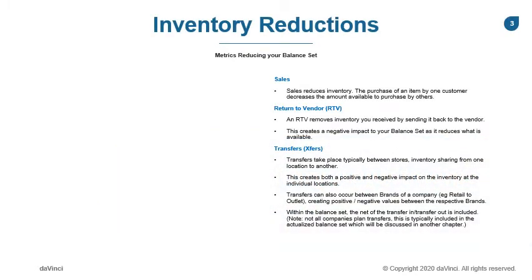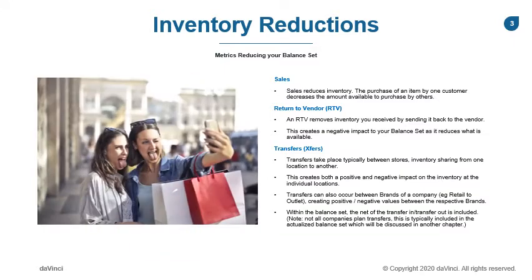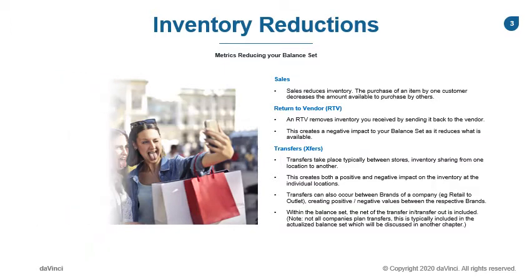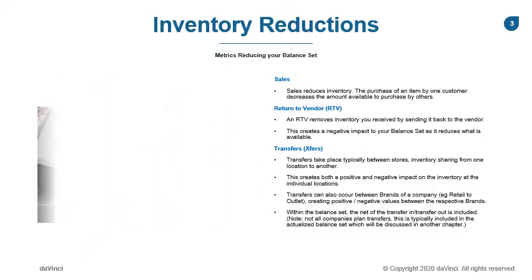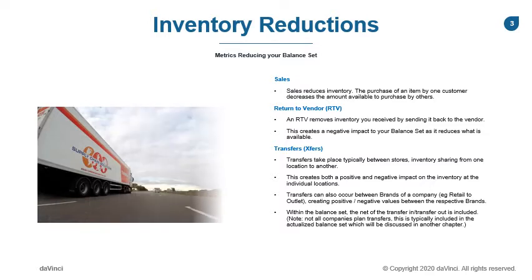From the last couple of sessions, we covered the balance set and talked about various metrics that decrease your inventory. Sales, for example, decreases your inventory. Other metrics that decrease your inventory are returns to vendors due to damaged goods or inventory transfers. These are typically not planned — they are usually updated with actual data from your merchandising system. I want to mention them because these actual feeds affect your balance set and will decrease your ending inventory.